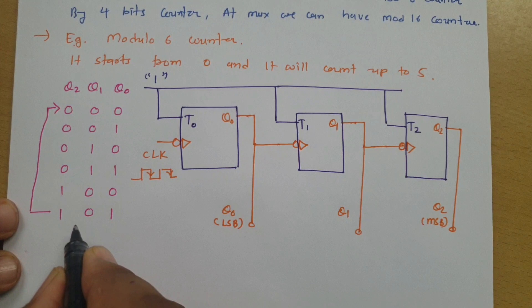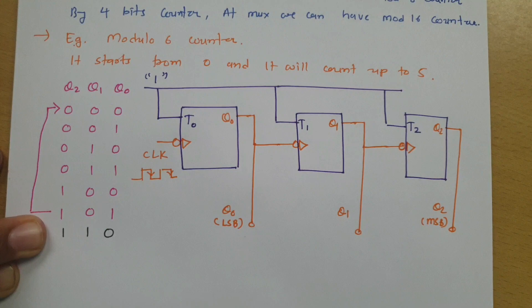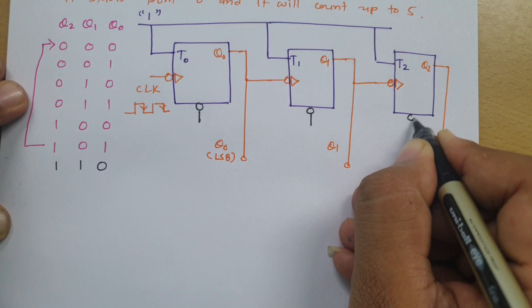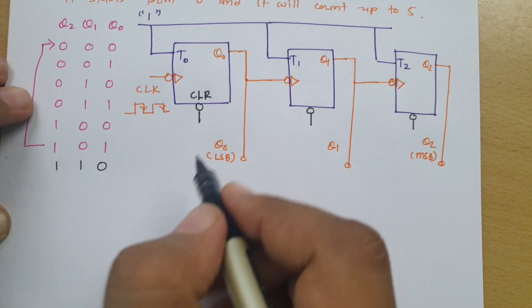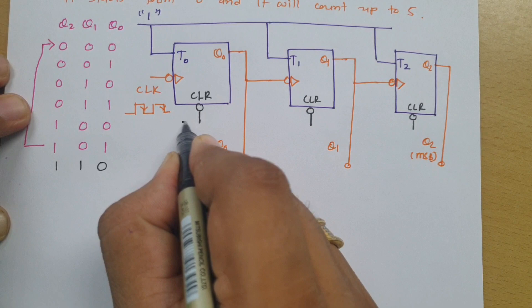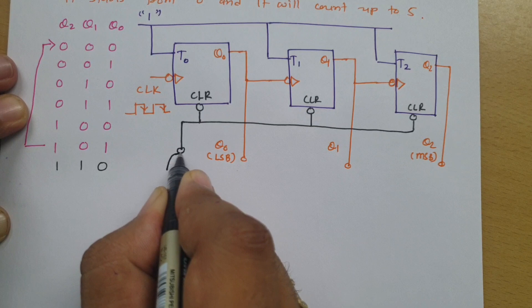When the next state would be 1-1-0, it should not appear — instead it should jump to 0-0-0. To achieve this, we use the clear terminal of the flip-flops. When an active-low signal is applied to the clear terminal, the output becomes zero. A common clear connection is made across all three flip-flops.